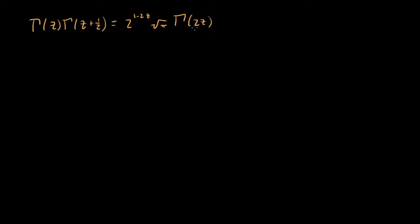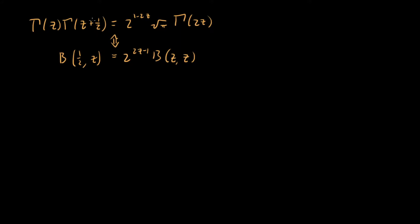How do we actually prove this is true? It turns out this is the same as showing that the beta function has the property that beta of one half and z is equal to two to the two z minus one times beta of z comma z. These two properties are equivalent, and this is in part why we love the beta function — simple beta function properties like this give us really neat gamma function properties.